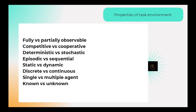Static versus dynamic environment: in a static environment, the environment state does not change while the agent is performing its action — for example, an empty house where nothing changes. In a dynamic environment, the environment keeps changing — for example, driving on a road with climate changes, big waves, and varying conditions, requiring the agent to adapt dynamically.